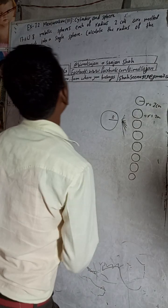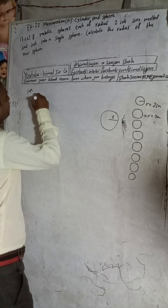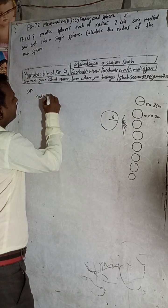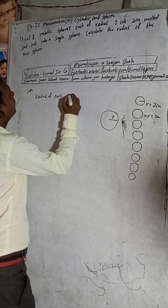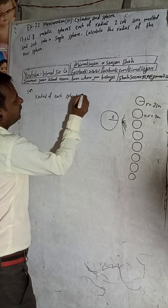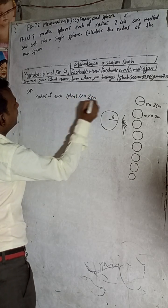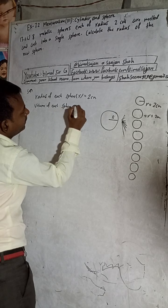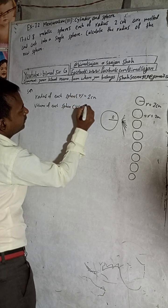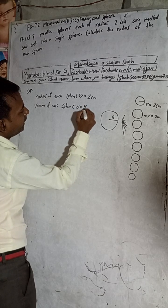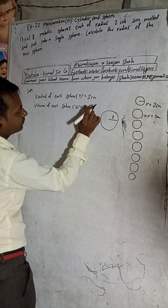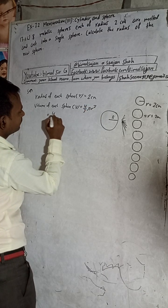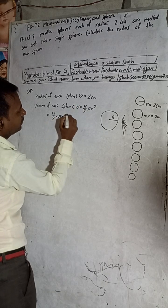Now I start the solution. 8 metallic spheres, each of radius 2cm. So the radius of each sphere r is equal to 2cm. Therefore the volume of each sphere is equal to 4/3 π r³ = 4/3 π (2)³.